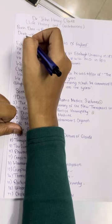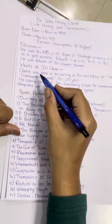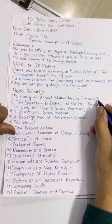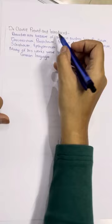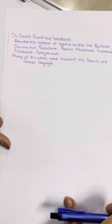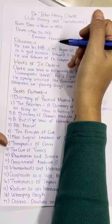To summarize what we studied today: his birth date, death date, education, works, the books he authored — with the most important ones highlighted — and the medicines proved by Dr. J.H. Clark. This is all we need to know about the life history and contributions of Dr. John Henry Clark.